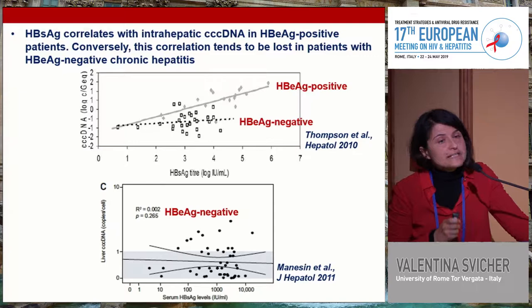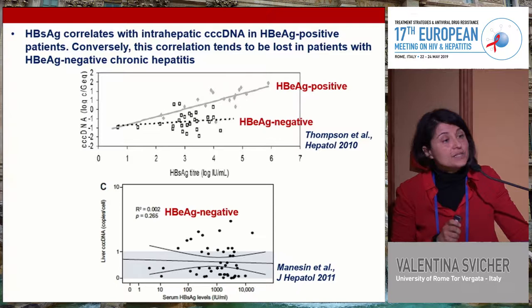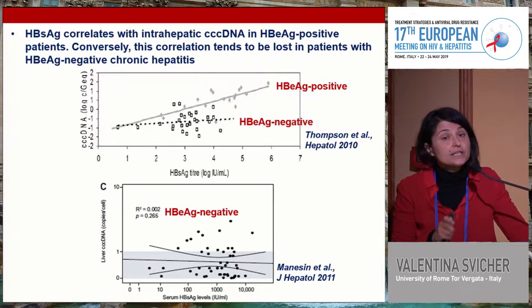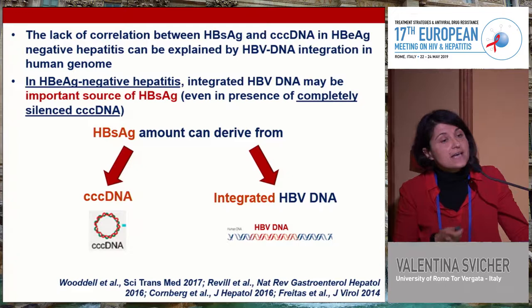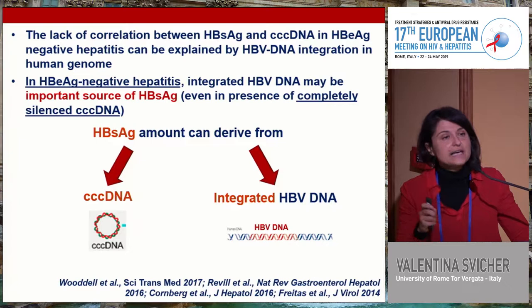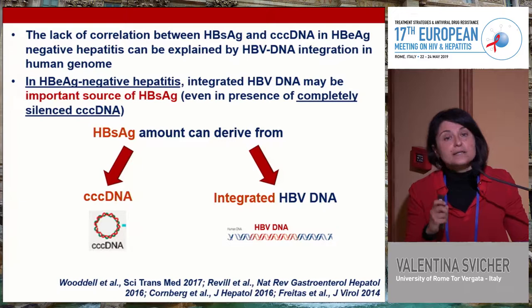Quantitative HBsAg correlates with the intra-hepatic amount of cccDNA in HBeAg-positive patients. Conversely, this correlation is completely lost in HBeAg-negative hepatitis. This can be related to the issue of HBsAg integration into the human genome — elegant studies have shown that in HBeAg-negative patients, integrated HBsAg can be a source of HBsAg. This means a patient might have reached functional cure but we cannot realize it since HBsAg continues to be produced by integrated sequences.